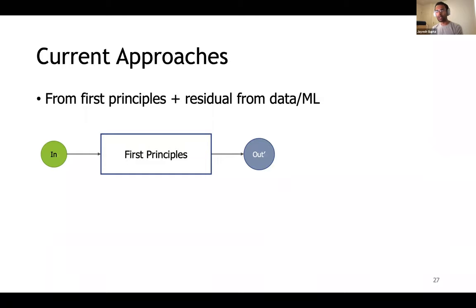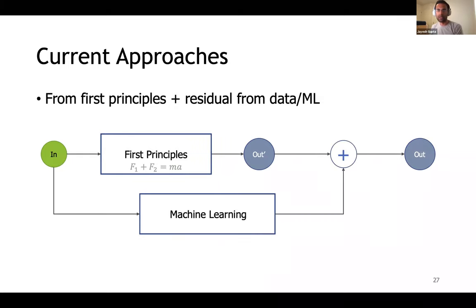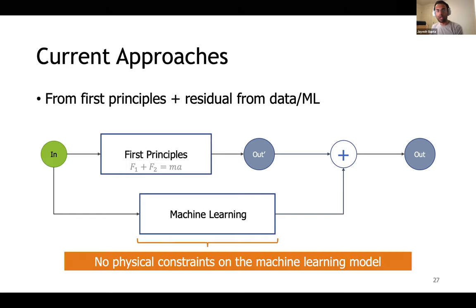The two camps are of course not completely distinct. Some recent works have tried combining their ideas. Usually, it goes about using first principles to come up with a model. Think F equals MA. But maybe we miss modeling something, like another force F3. We can then train a machine learning model to fit the residual from the real data.